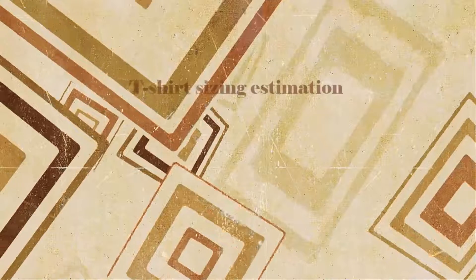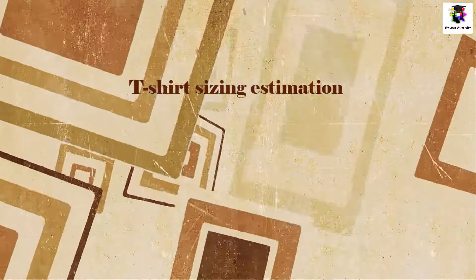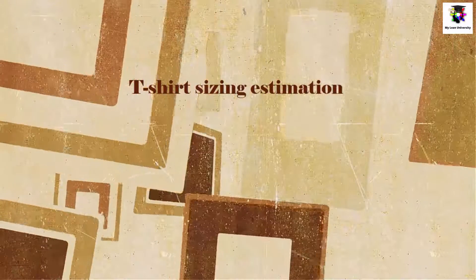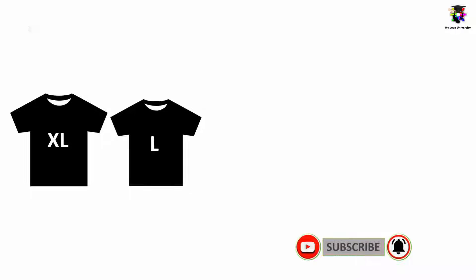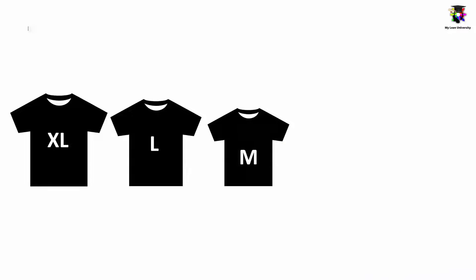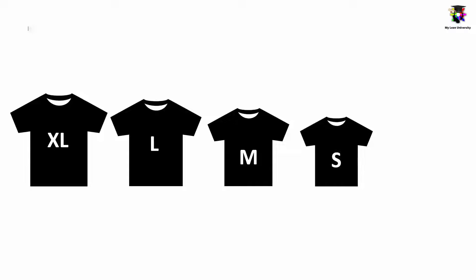There is another method of estimation of user stories when a quick and rough estimation of a massive backlog of items is required. In this technique, the sizes are estimated in t-shirt sizes ranging from XL or extra large to XS or extra small, which simply denotes the size or number.